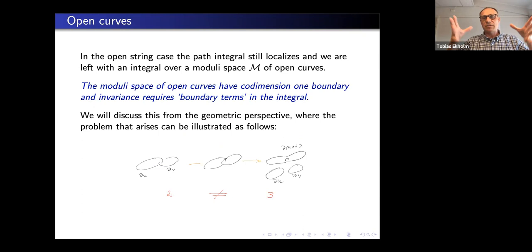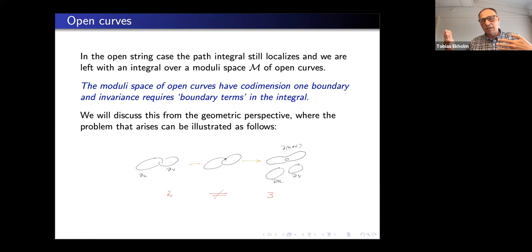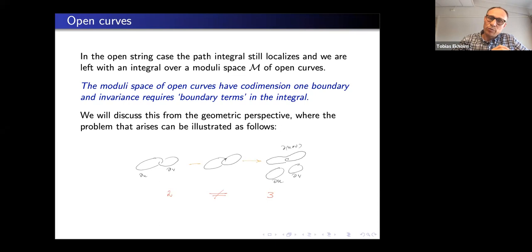That was the background from the generalities about topological string as a physical theory, how it localizes on holomorphic curves, and then you can approach Gromov-Witten theory from the math side starting with holomorphic curves, showing the count does not change, and then organizing via the Gopakumar-Vafa story.